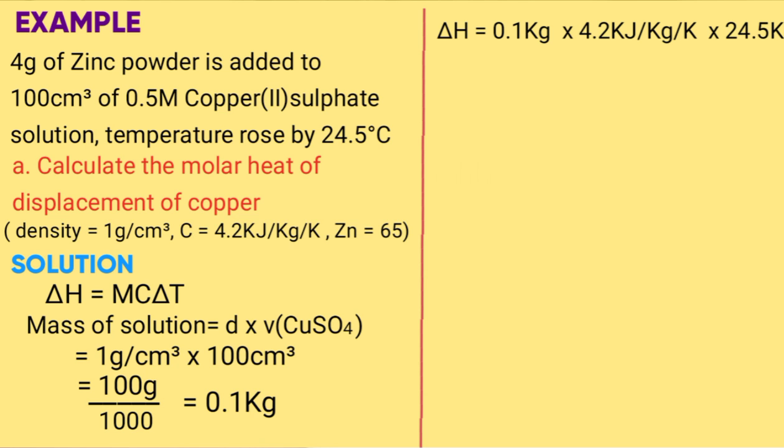So ΔH will be given by 0.1 kg times 4.2 kJ/kg/K times 24.5 K, which gives us 10.29 kilojoules.